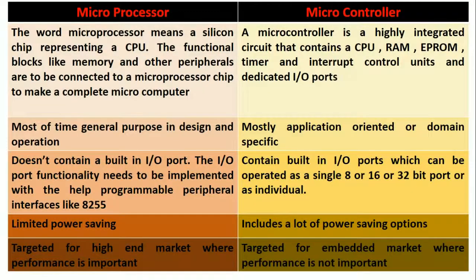Here is the table which gives the comparison between microprocessor and microcontroller. The word microprocessor means a silicon chip representing a CPU, or simply a CPU on a single chip. The functional blocks like memory and other peripherals are to be connected to a microprocessor chip to make a complete microcomputer.